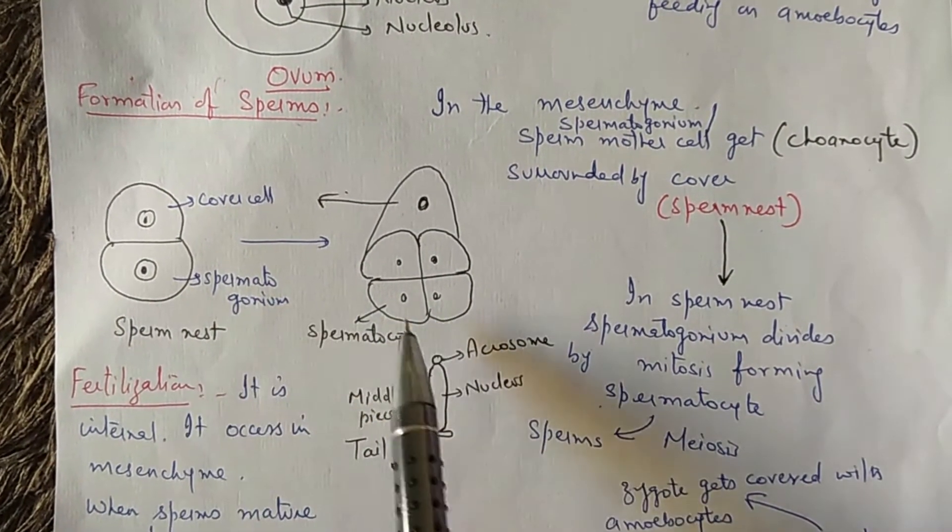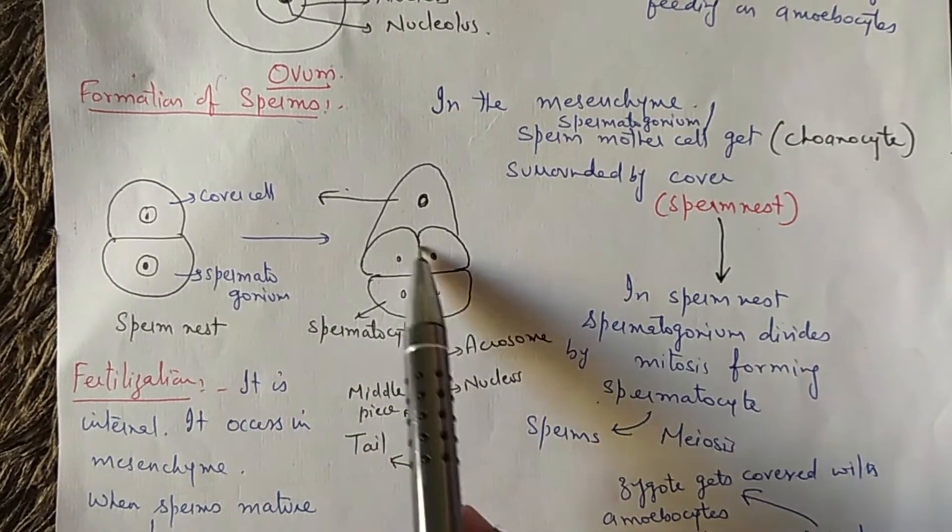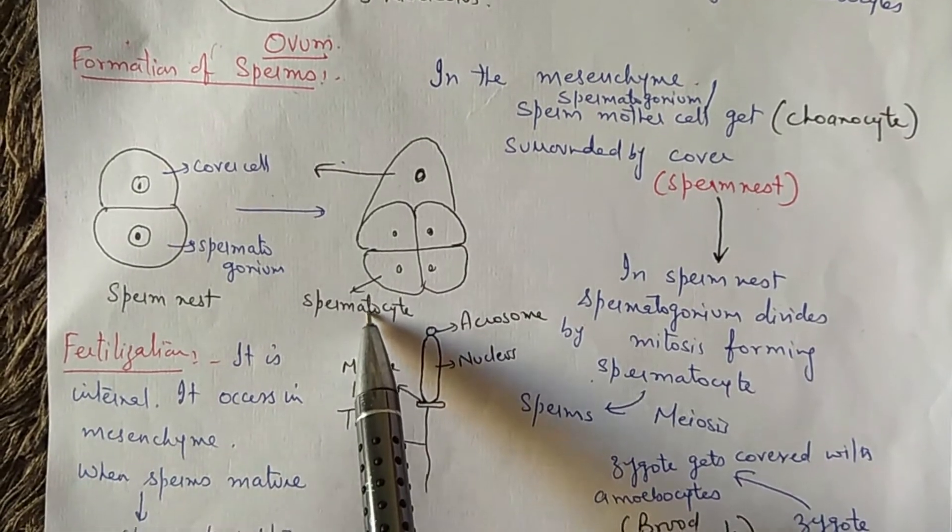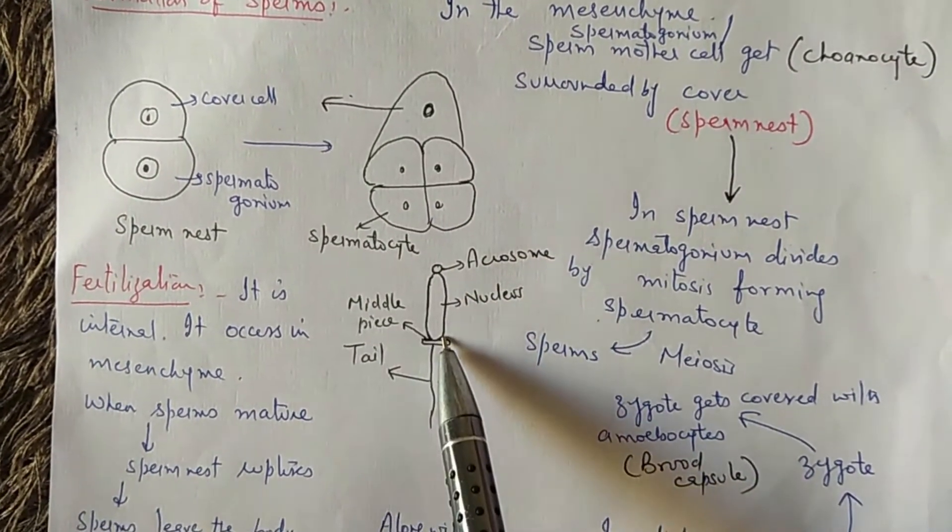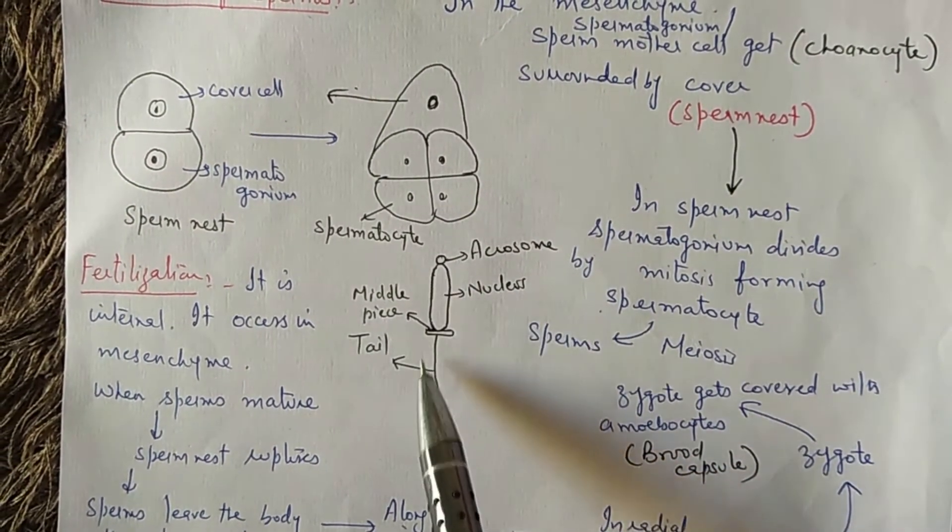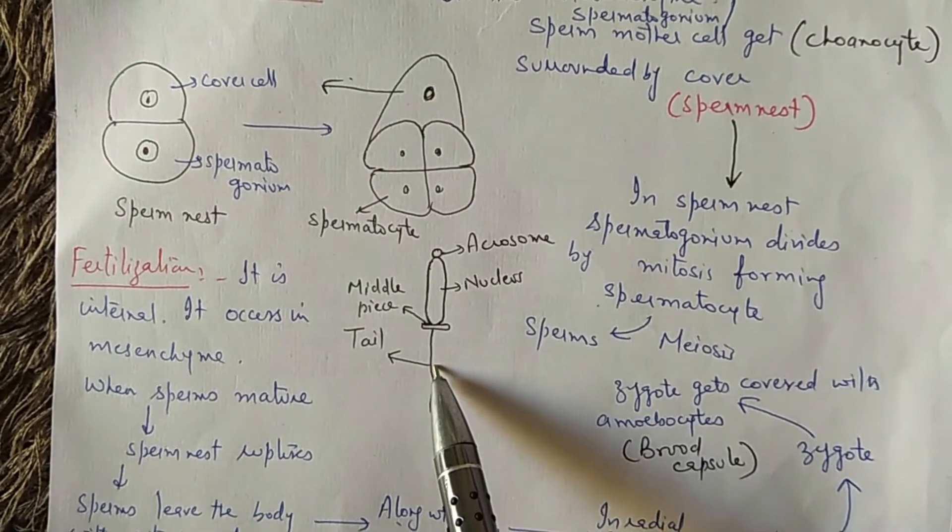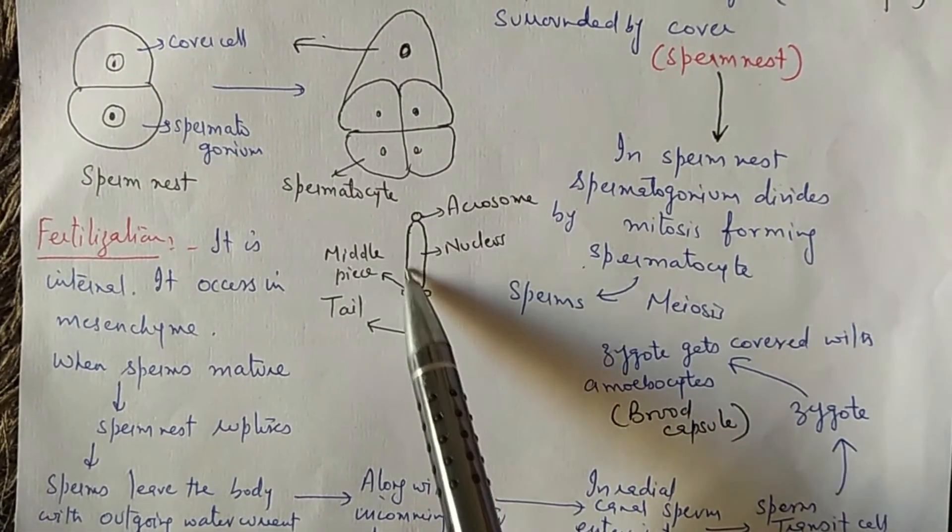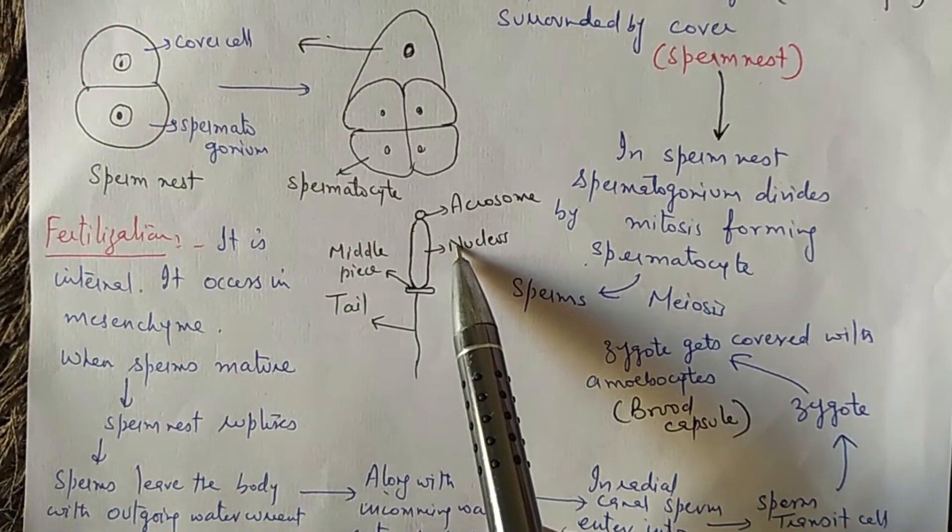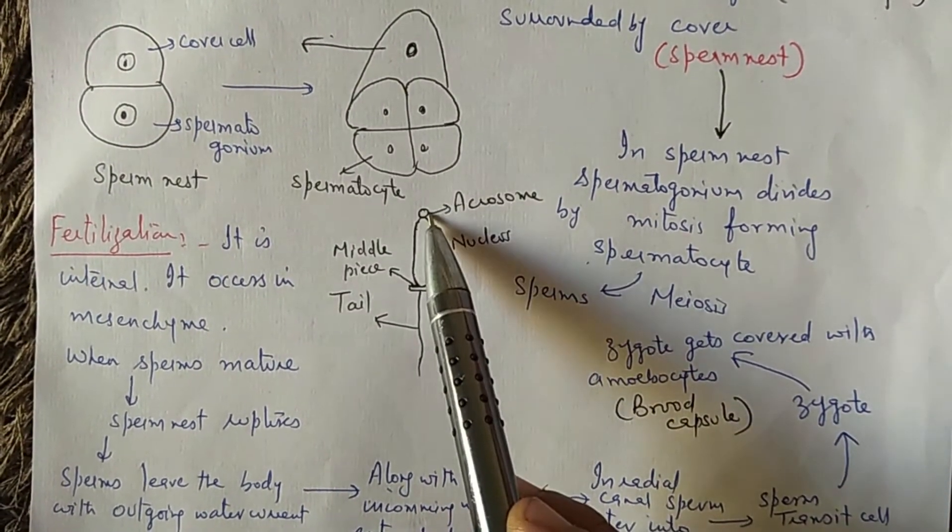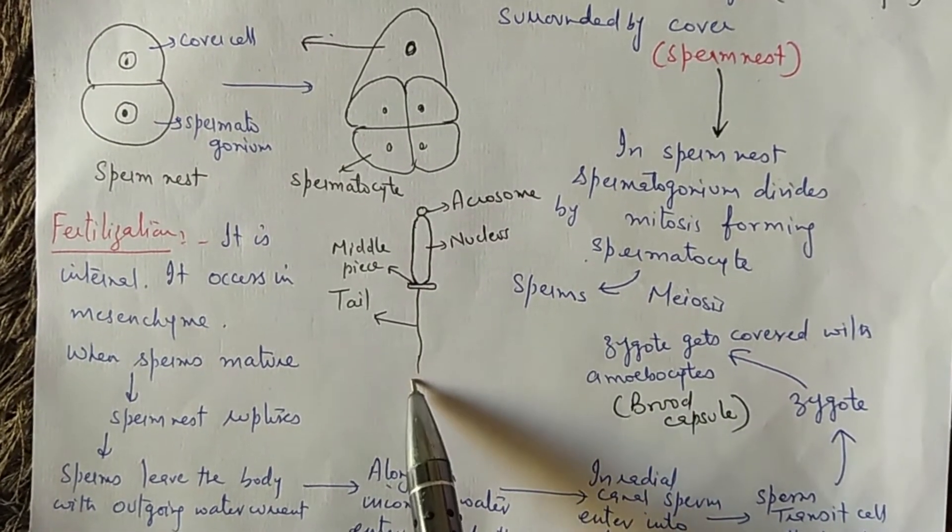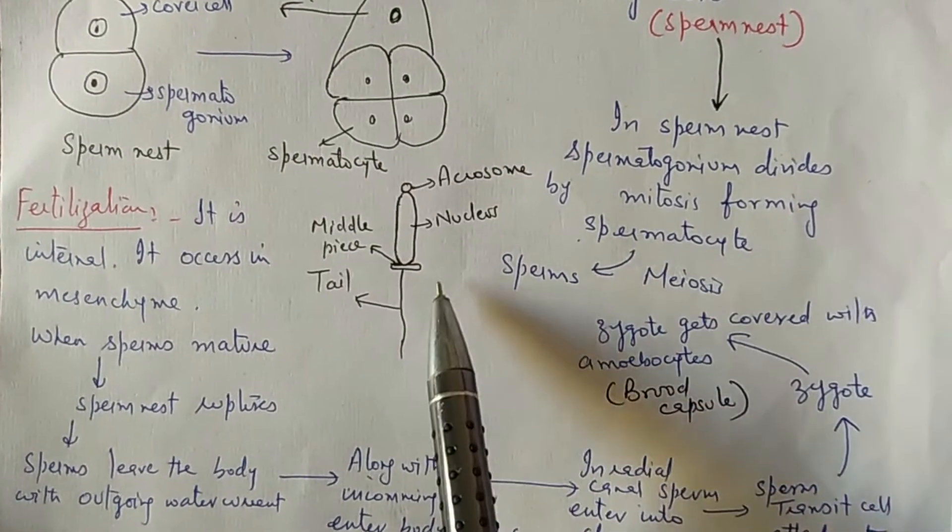Within the sperm nest, spermatogonium or sperm mother cell undergoes mitosis forming spermatocytes, and then spermatocytes undergo meiosis forming sperms. The structure of mature sperm has three parts: the head which is divisible into elongated nucleus and a rounded acrosome, a very short middle piece, and a long tail.